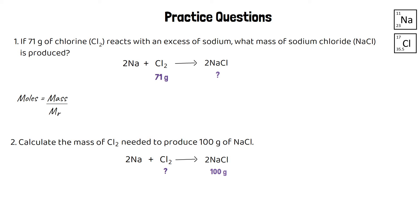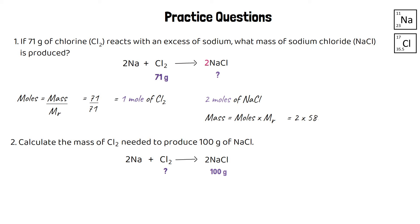For the first question, work out moles of chlorine: mass 71, relative formula mass 71, so we're starting with 1 mole of chlorine. Because we make twice as many moles of sodium chloride as the moles of chlorine we started with, 1 mole of chlorine gives 2 moles of sodium chloride. The mass of 2 moles of sodium chloride is 2 times the relative formula mass of 58.5, which equals 117 grams. Starting with 71 grams of chlorine, we can make up to 117 grams of sodium chloride.